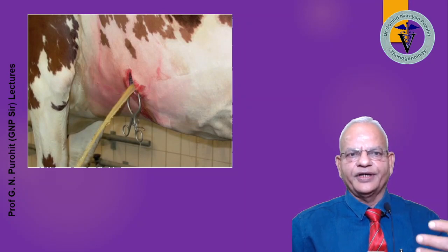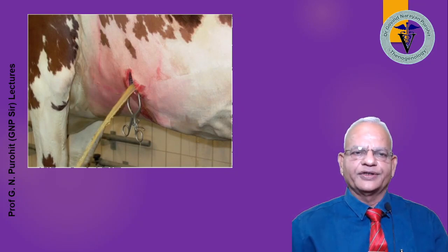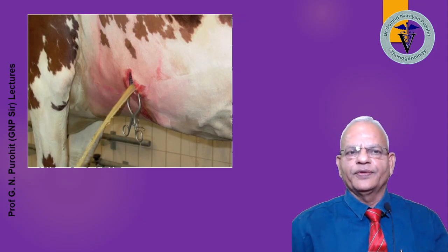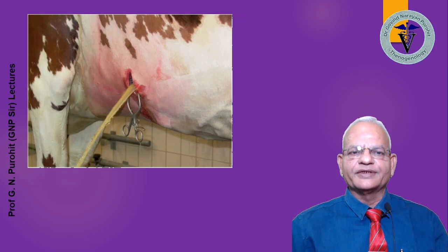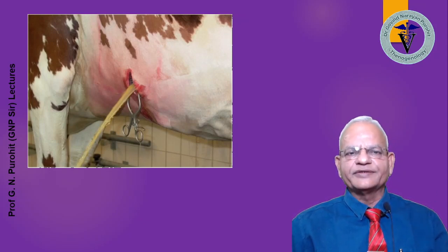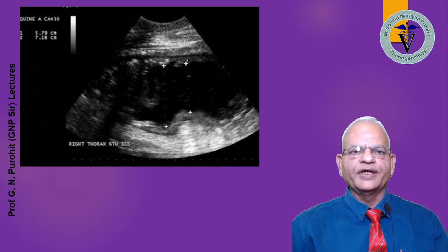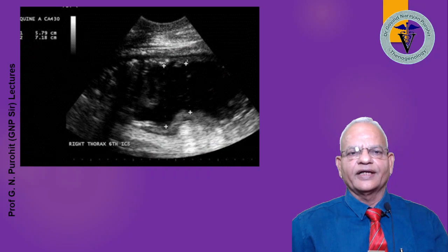Rarely, the foreign body may pierce through the reticulum, cause peritonitis, and then cause an abscess over the skin near the elbow. This abscess may rupture to release plenty of pus, and sometimes the foreign body may also come out. This is an ultrasound picture of the heart showing thickening of the pericardial sac and the presence of pus inside the pericardial sac.